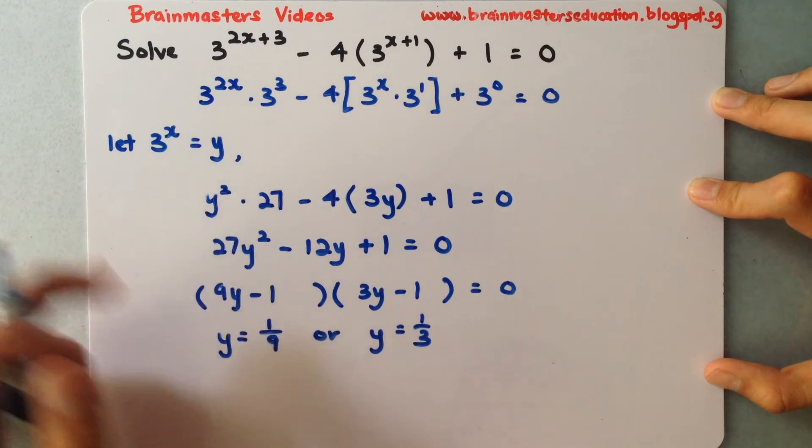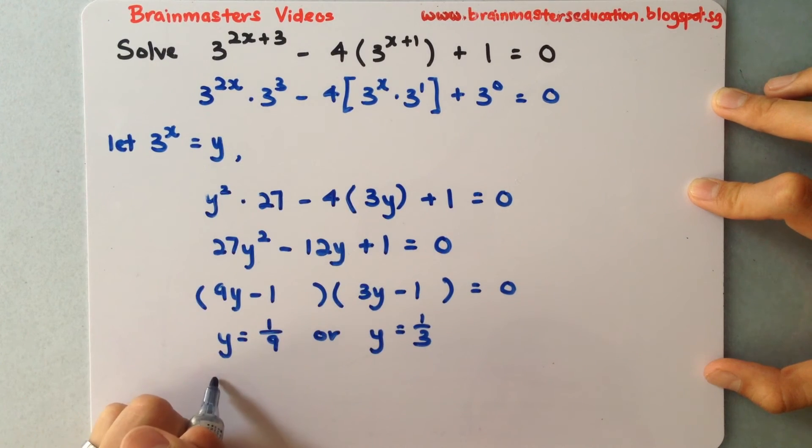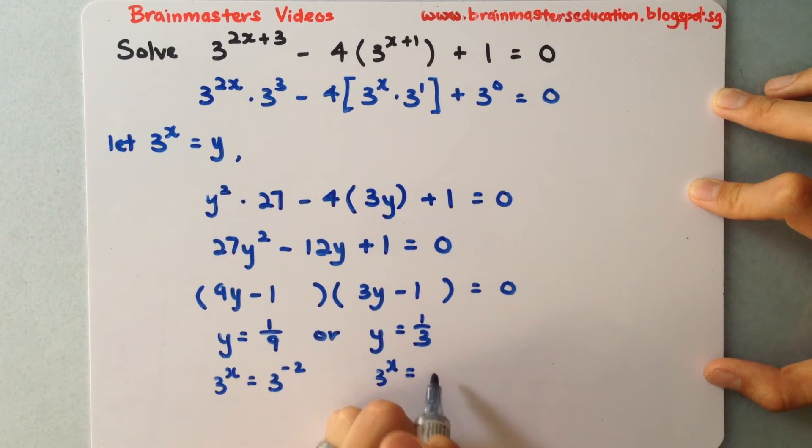My aim is to find x. So I substitute back 3 to the power of x. This gives 3 to the power of x equals 3 to the power of minus 2, or 3 to the power of x equals 3 to the power of negative 1.